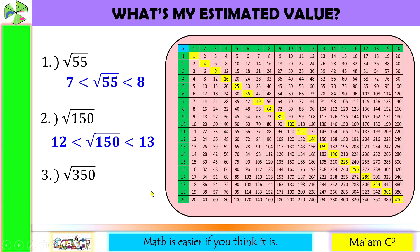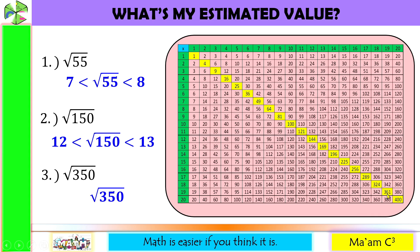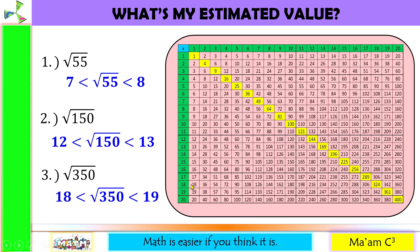Last one is square root of 350. 350 is somewhere in between 324 and 361. So square root of 350 is less than the square root of 361, which is 19, but greater than the square root of 324, which is 18.